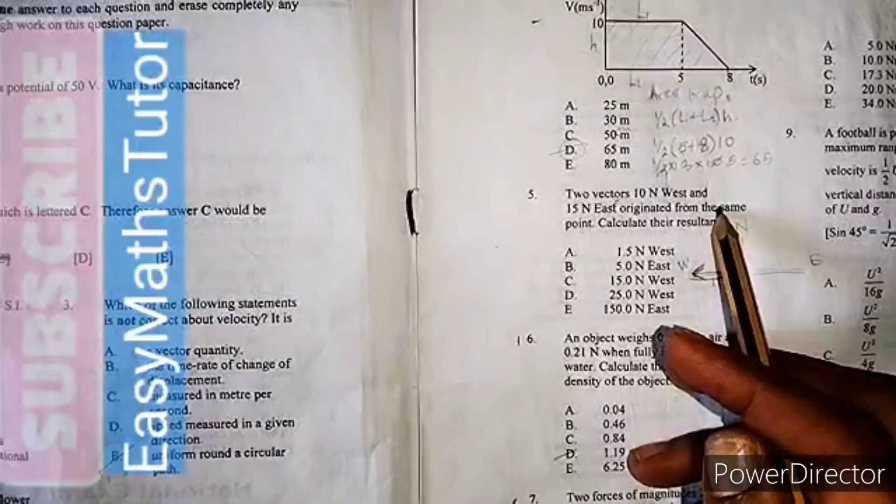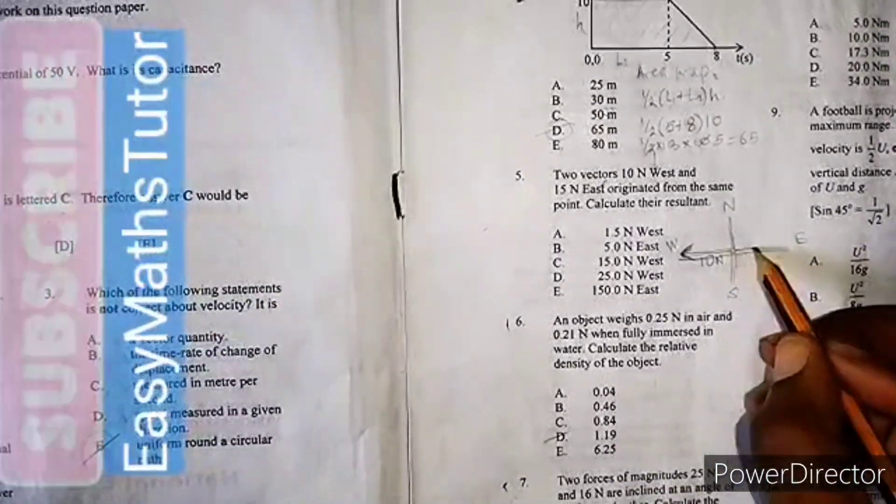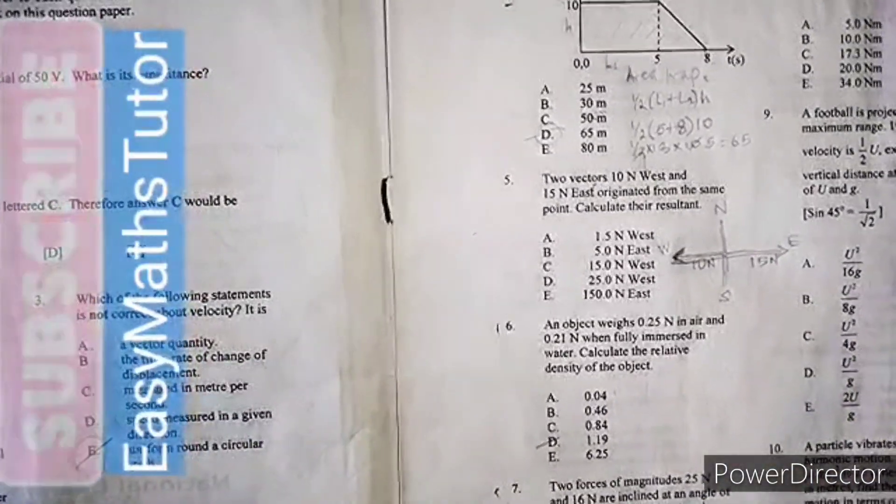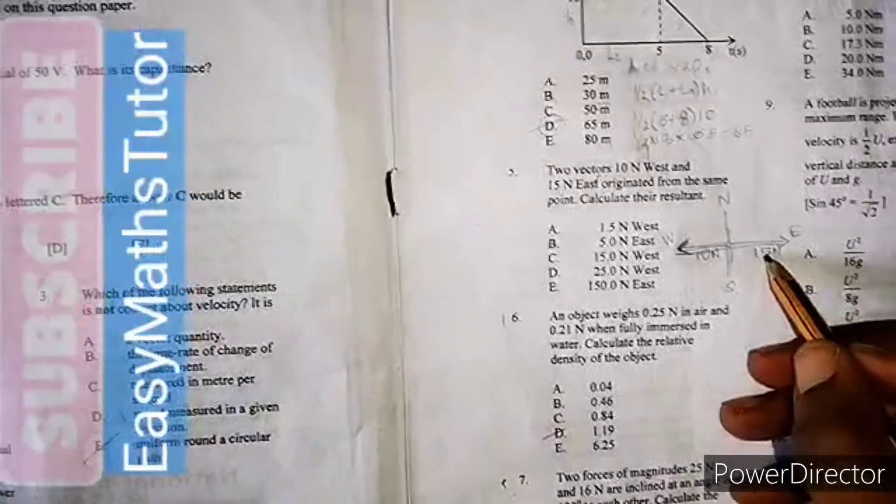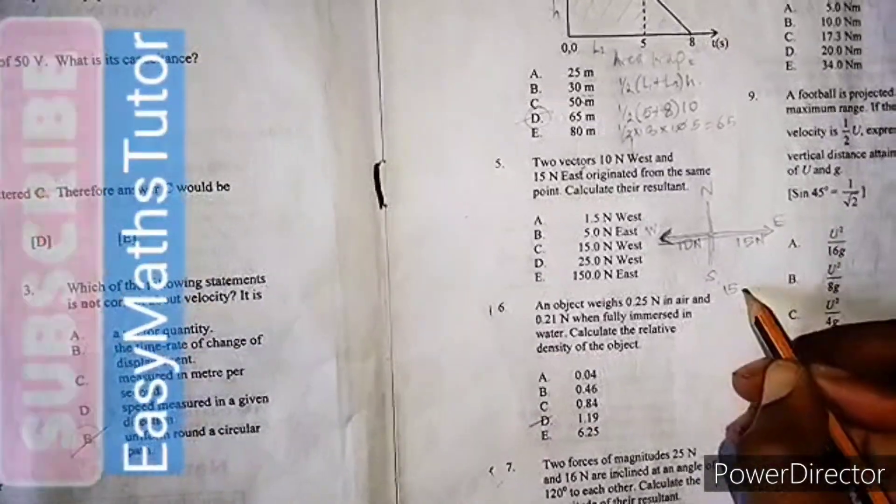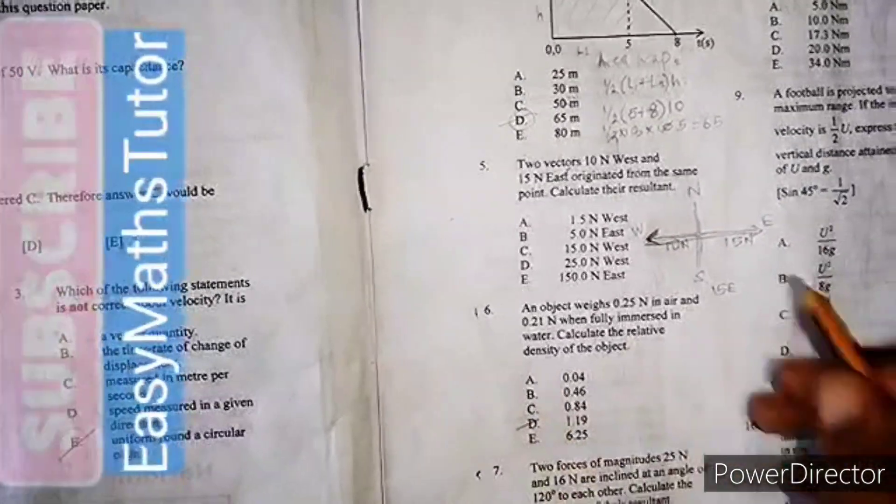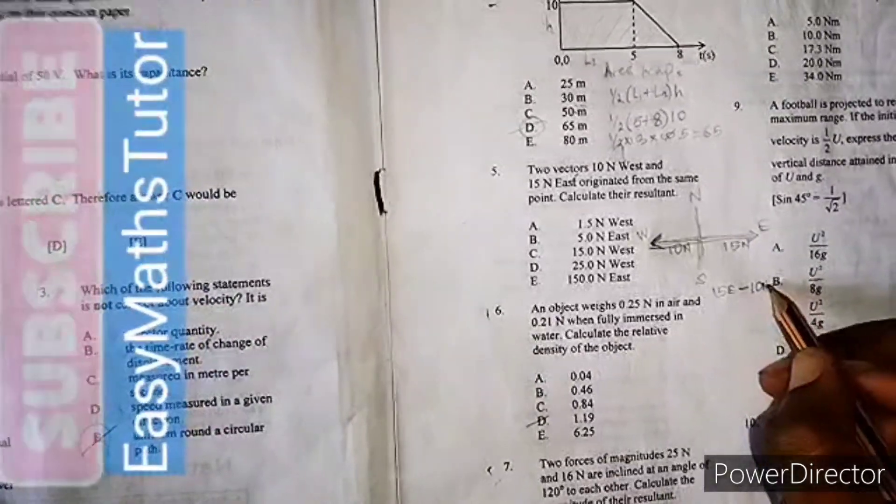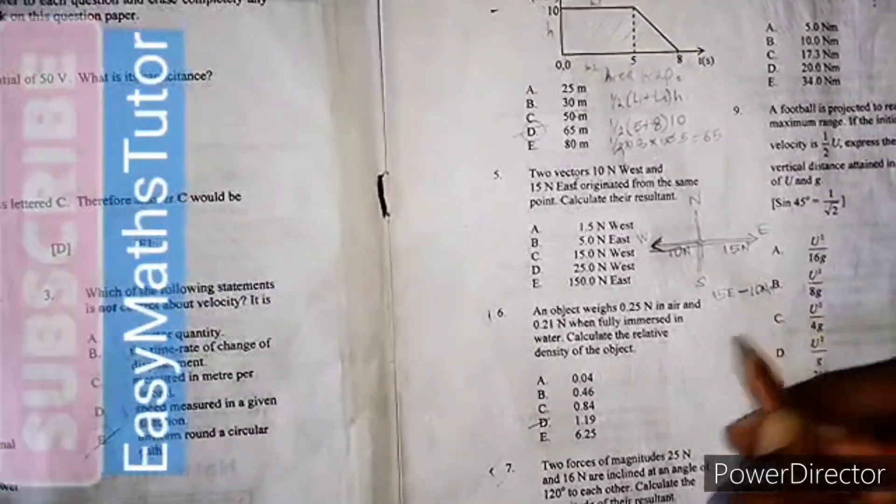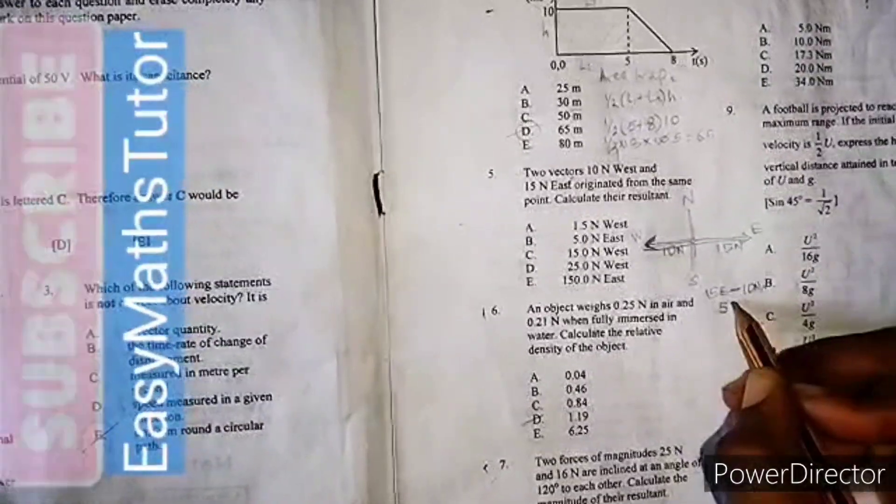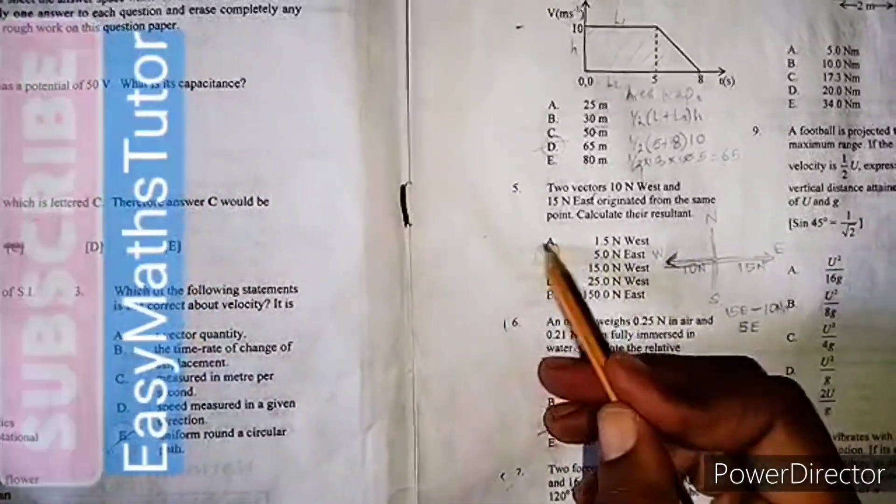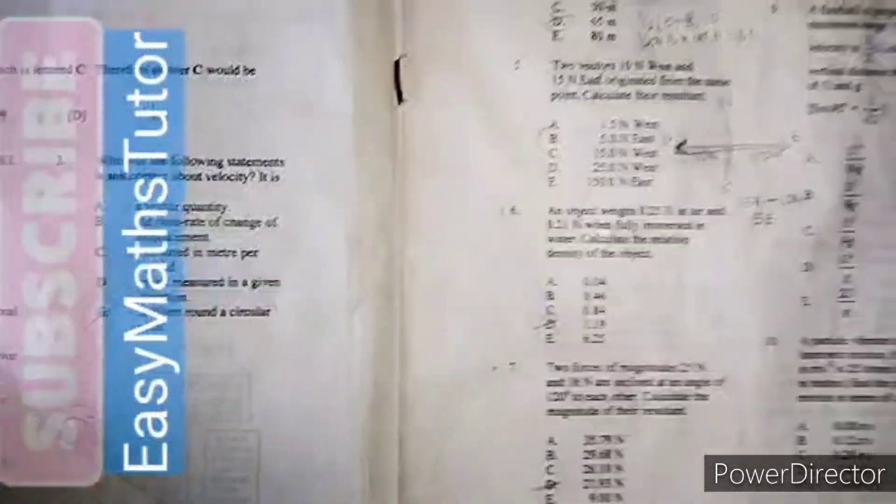Two vectors: 10 newton west, so we'll measure a vector going in this direction - 10 newton. The second vector is going 15 newton east. Calculate the resultant. We have a greater force going east, so we have 15 east minus 10 west. 15 minus 10 gives us 5. We'll choose east because east is more, so we have 5 newton east. Our answer will be B.